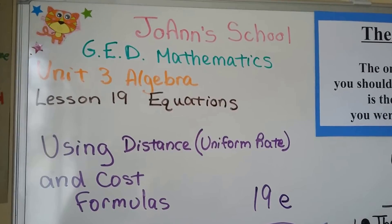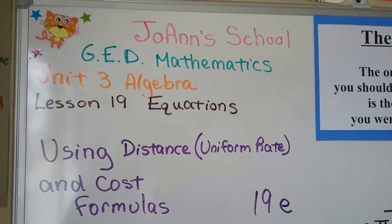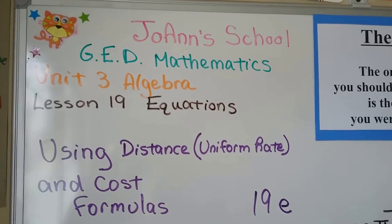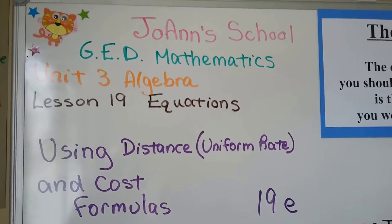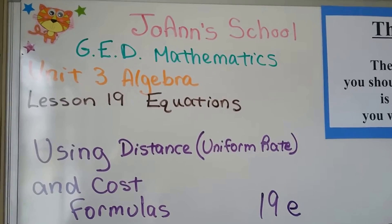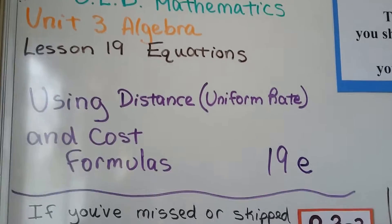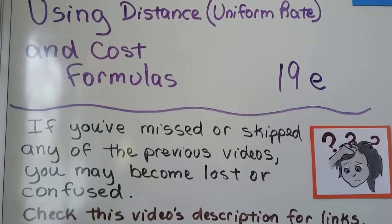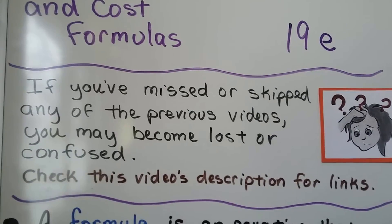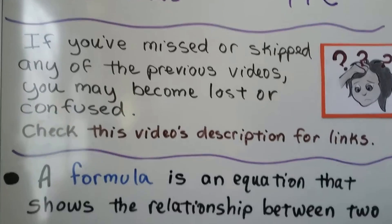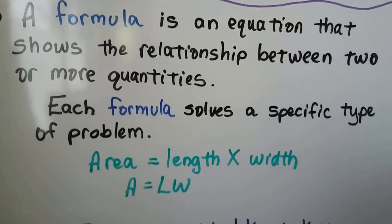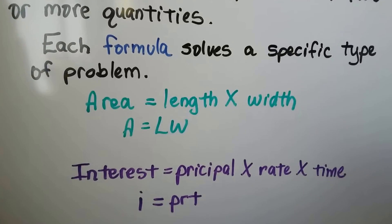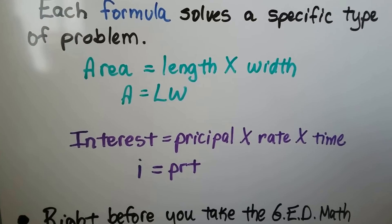The book titled this Using Distance and Cost Formulas, but I want you to call it a uniform rate formula instead of a distance formula. I'll explain that in a second. If you've missed any of the previous videos for Lesson 19, they're linked in the description, along with some extremely helpful videos from Algebra 1, even some from 6th grade and Algebra 2. A formula is an equation that shows the relationship between two or more quantities, and each formula solves a specific type of problem.